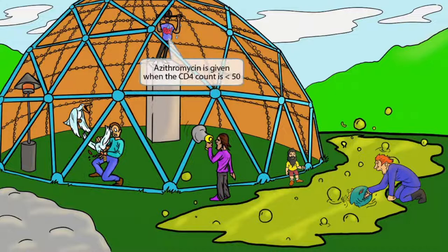If you look closely at his shirt, you can see it has a map of the United States on it. The U.S. has 50 states, so it should help you remember the number 50. Also, remember that this guy is about to go down the zipline — zip sounds like azithromycin, to help you remember that antibiotic. Putting these two ideas together should help you remember that azithromycin is given prophylactically when the CD4 count is less than 50.